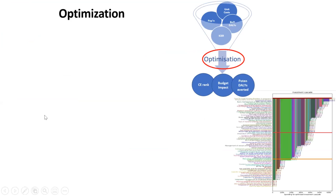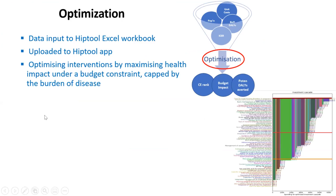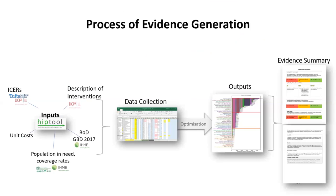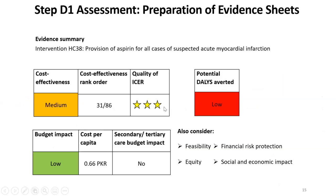The optimization analysis was done in the HIP tool to calculate budget impact, cost per capita, and DALYs awarded. Evidence on incremental cost-effectiveness ratios, unit cost, burden of disease, population in need, and current and target coverages were optimized in the HIP tool. This output was presented in evidence summary sheets — developed for more than 180 interventions — using traffic signal lights to indicate low, medium, and high priority as red, yellow, and green respectively. Four scenarios were developed showing cumulative optimized spending of interventions per year at pre-specified coverage rates for year two, year five, year ten, and 80% target rates in line with the sustainable development goals.